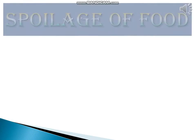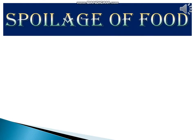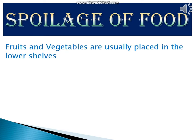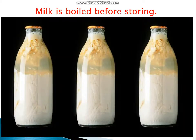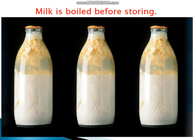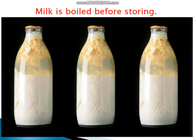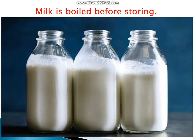Have you ever observed what people often do after shopping for groceries? Here are a few common observations. Fruits and vegetables are usually placed in the lower shelves of the refrigerator when they have to be used after a few days. Milk is boiled before storing. Also, bottles and packets containing milk are stored in the refrigerator whenever possible.